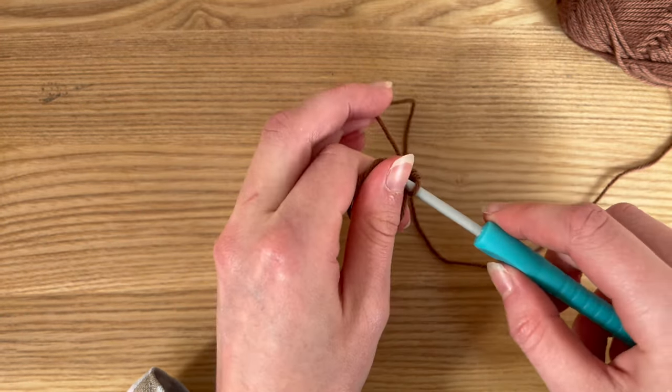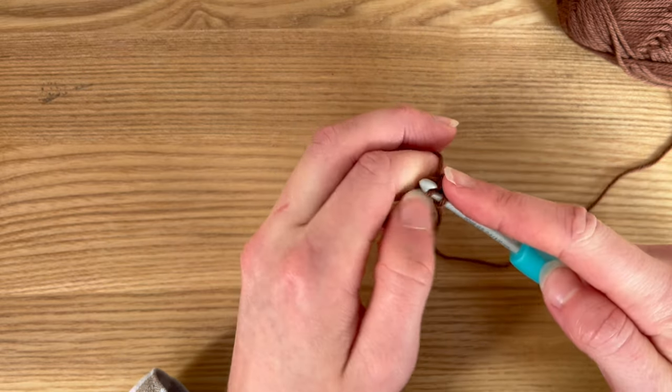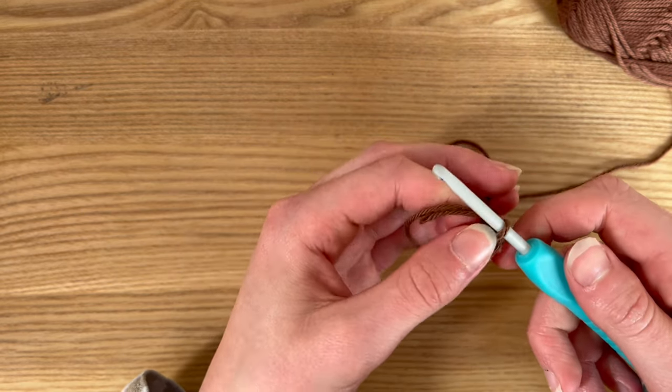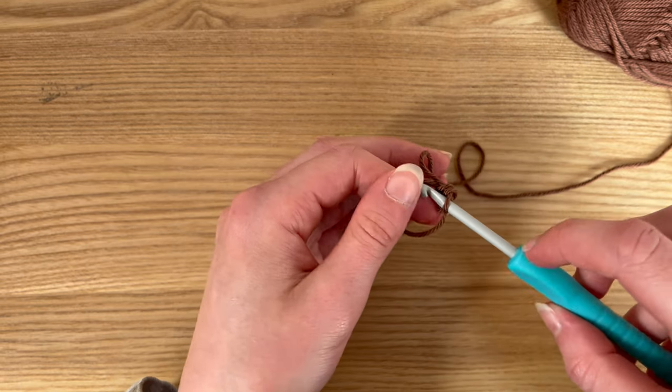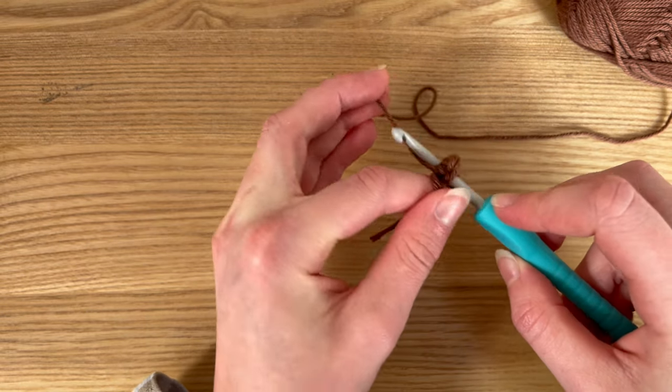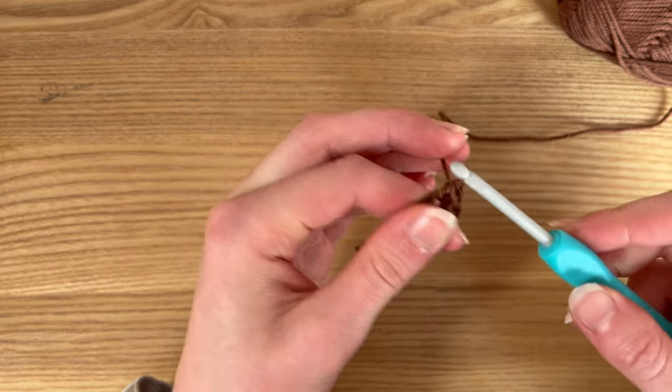And again, through the loop, yarn over, pull through, yarn over, pull through. That's our second crochet. And we do this again three more times. So through the hole, yarn over, pull through, yarn over, pull through two.